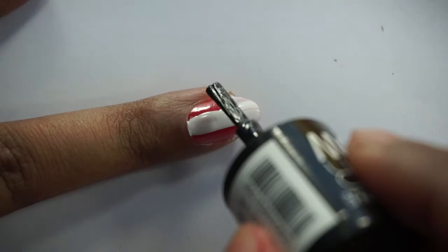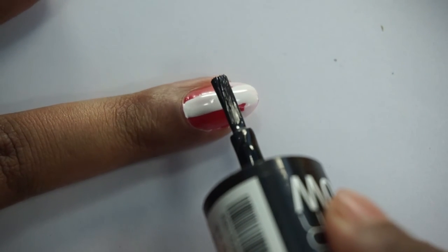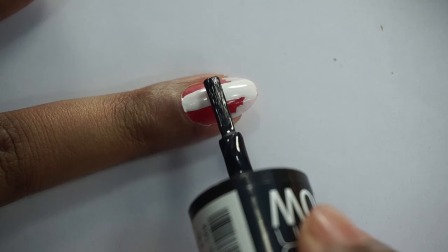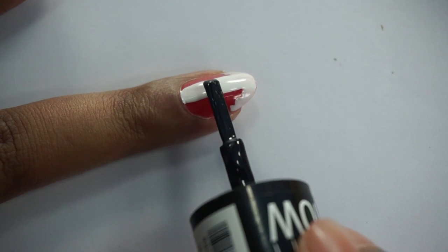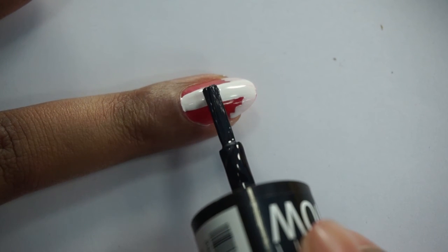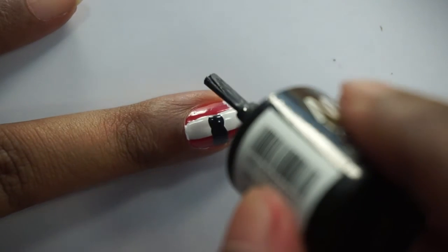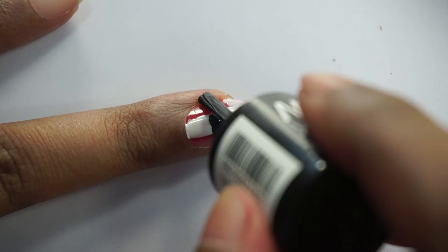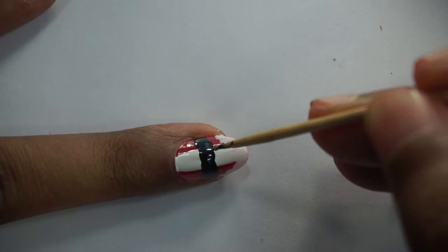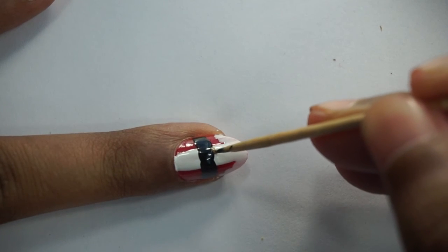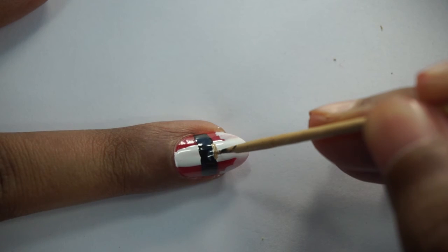Now we move on to focus on the belt. Taking the black nail polish, apply a straight line. Once again, wait until this dries completely. We take a gold nail polish and with the help of a toothpick, apply straight lines using the stippling motion.